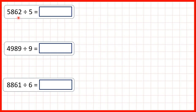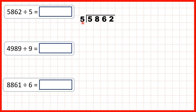For these questions we're dividing using short division, but we're going to get remainders in our answers. First we have 5,862 divided by 5, so we can set the question out like this with the number that we're dividing by, or the divisor, on the left.